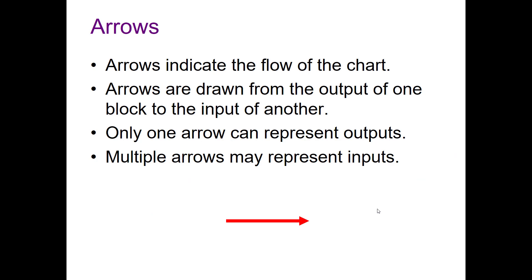And then we've got arrows. They're pretty straightforward. They're going to indicate the flow of a flowchart, so you're going to follow these arrows. They're going to be drawn from the output of one block to the input of another block. Only one arrow can represent an output, but you can have multiple arrows representing inputs.